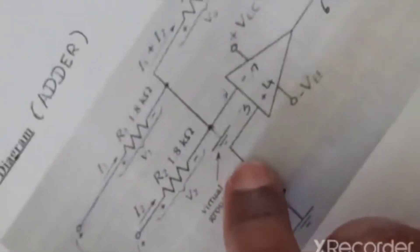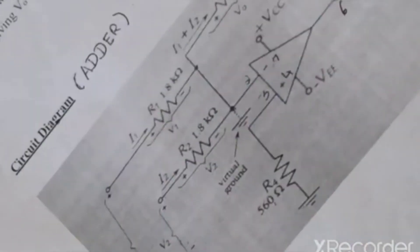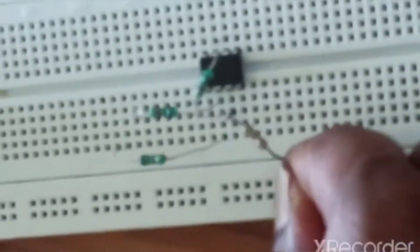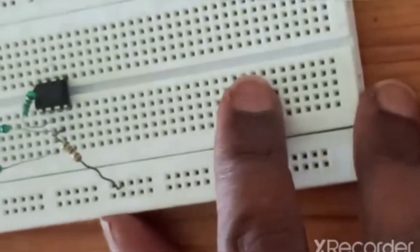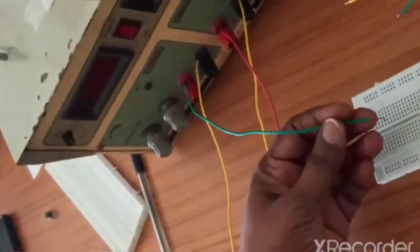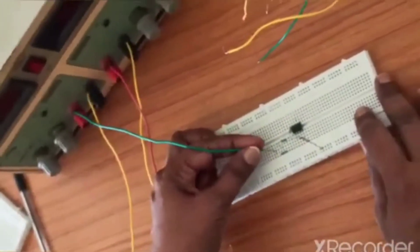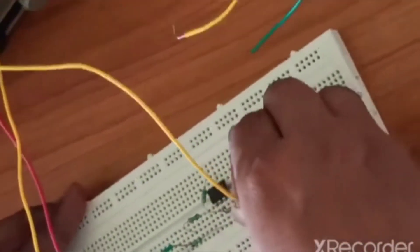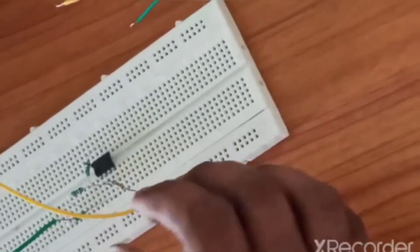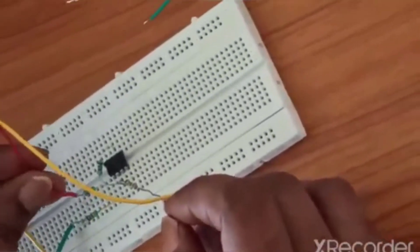Now we connect the third pin with a minimizing resistor of 560 ohms. We then connect the input sources: one supply acts as V1 and the other as V2. For V1, the positive terminal connects to one end of the resistor and the negative is grounded. Similarly for V2, the positive terminal connects to the other end of the resistor and the negative is grounded.